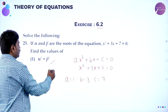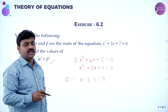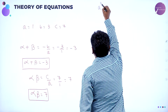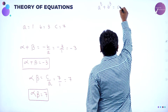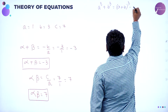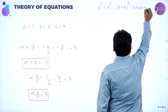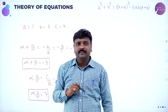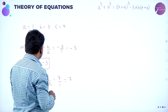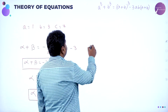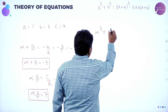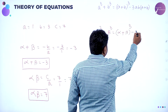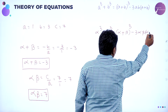They want you to find alpha cube plus beta cube. We have an identity: A cube plus B cube can be written as A plus B the whole cube minus 3AB into A plus B. So alpha cube plus beta cube equals alpha plus beta the whole cube minus 3 times alpha into beta into alpha plus beta.